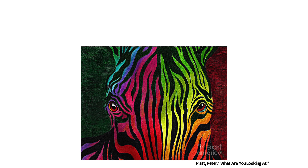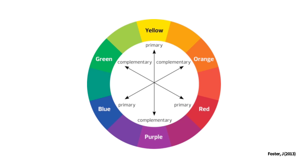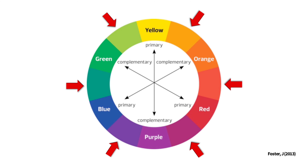Now let's talk about tertiary colors. You get tertiary colors when mixing your primary colors with your secondary colors. This means that all the colors in between each of your primary and secondary colors on the wheel are your tertiary colors. That's simple!